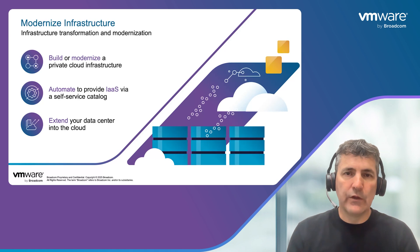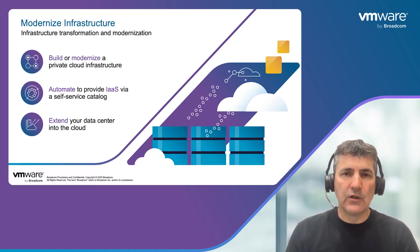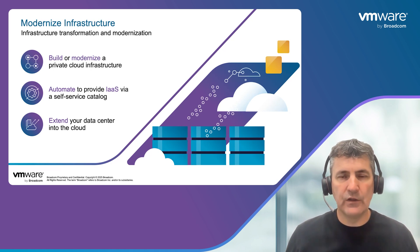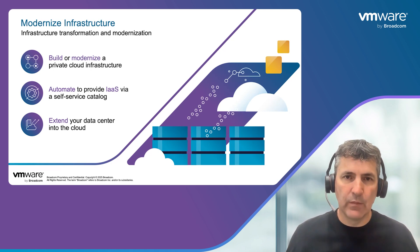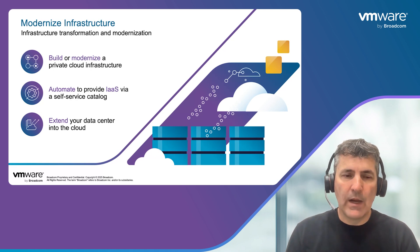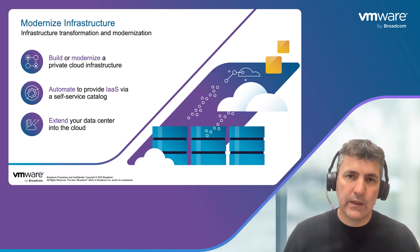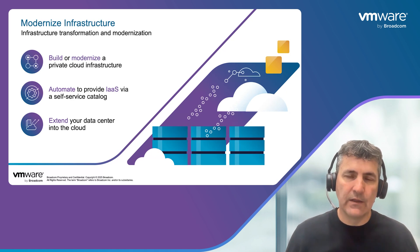We do recognize that when implementing a private cloud, it's not just about the data center. Customers have infrastructure running in the data center, infrastructure running at the edge, and infrastructure running in the public cloud. So it's also about extending out to the edge and to the cloud, to be able to help them implement a modern infrastructure and deploy a private cloud both in their data center, at the edge, and in the public cloud.